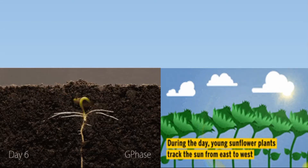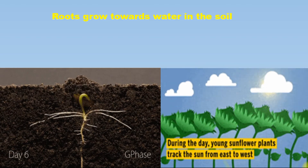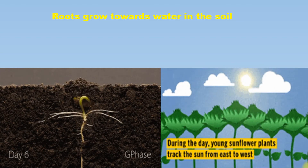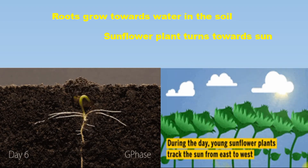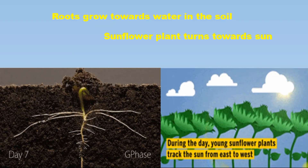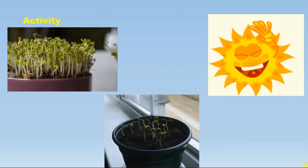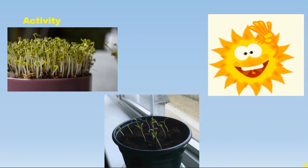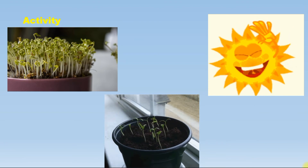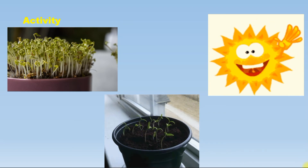In the first picture, roots of a plant grow towards water in the soil — this is a kind of movement in plants. In the second picture, a sunflower plant turns towards the sun — this is also a kind of movement in plants. Now we'll see one activity showing how plants demonstrate movement.